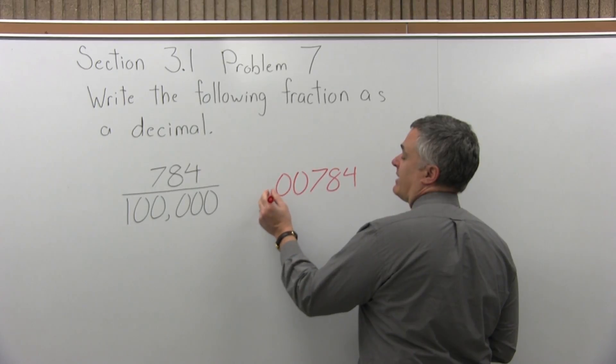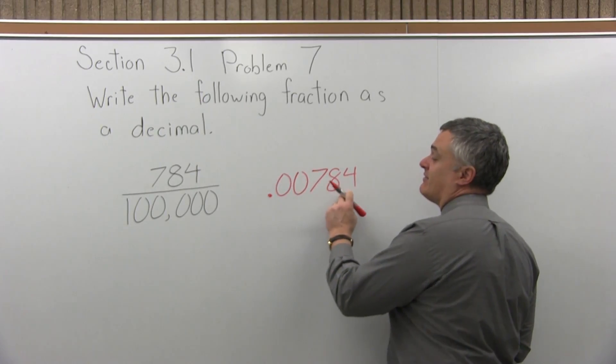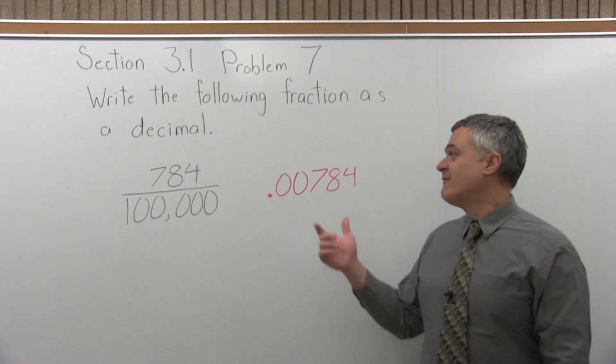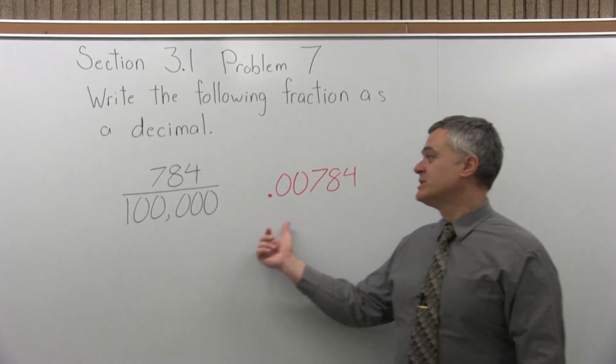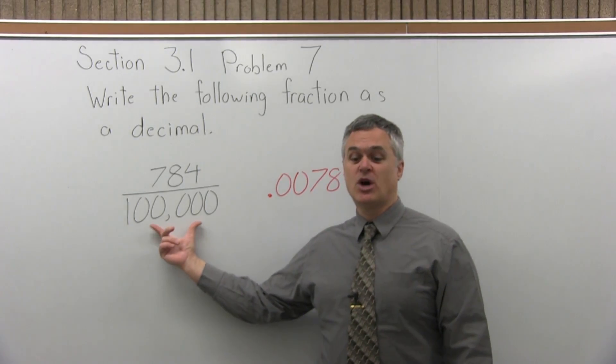So if I put a decimal, two zeros, then 784, now I have five places after the decimal, which is the same as the number of zeros in the denominator.